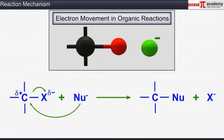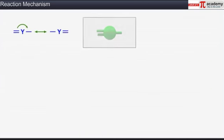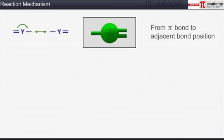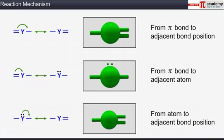The movement of an electron pair in organic reactions is denoted by a curved arrow. The curved arrow starts from the point where an electron pair is shifted and ends at the final location where the pair of electrons may move. For example, electrons flow from a pi bond to the adjacent bond position, or from a pi bond to the adjacent atom, or from an atom to the adjacent bond position.